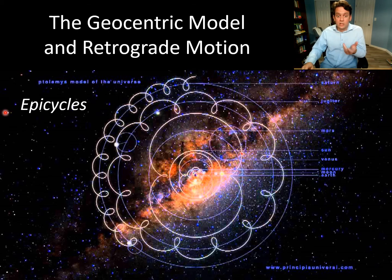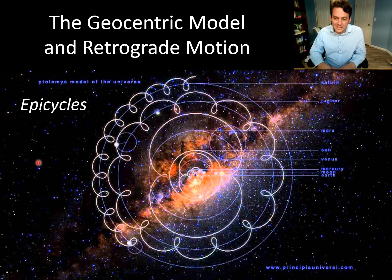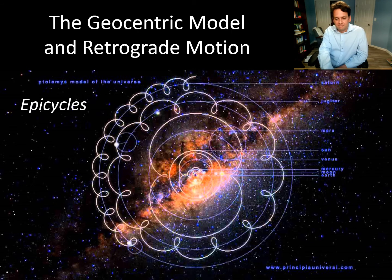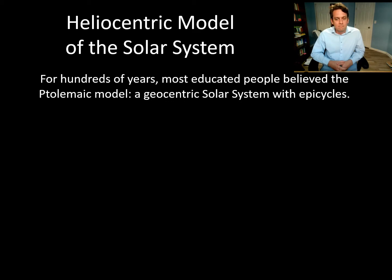This sketch shows Ptolemy's particular model of the solar system — spelled P-T-O-L-E-M-Y — with several planets and their epicycles drawn in. For hundreds of years, almost every educated person in the Greek world believed in the Ptolemaic model: a geometric solar system with epicycles. They were following the scientific method even then — simple circular orbits didn't work, retrograde motion demanded epicycles, and those epicycles explained the data well for centuries.